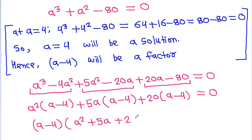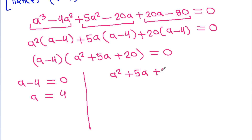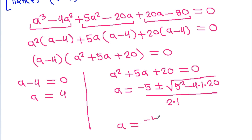So either (a minus 4) equals 0, meaning a equals 4, or a² + 5a + 20 equals 0. Applying the quadratic formula: a equals [minus 5 ± √(5² minus 4 × 1 × 20)] / (2 × 1), which gives [minus 5 ± √(25 minus 80)] / 2, and that is [minus 5 ± √(minus 55)] / 2.